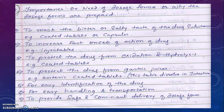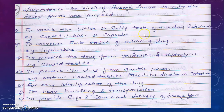We have seen the need or importance of dosage forms — why dosage forms are prepared. First, to mask the bitter or salty taste of drugs. Drugs that have a bitter or unpleasant taste are coated — water-coated tablets — or sweetening agents are added, or they are filled into capsules so the bitter taste is masked. Second, to increase the fast onset of action.